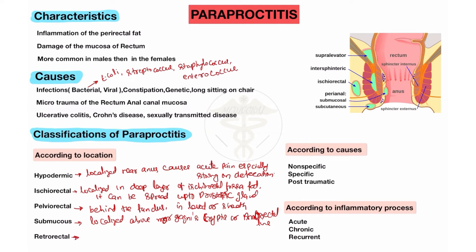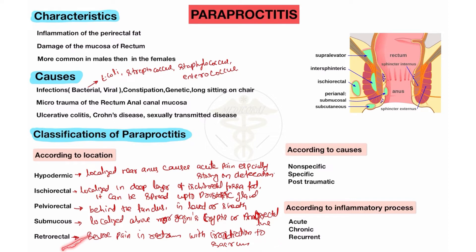Retrorectal Paraproctitis is present in the region of the rectum, causing severe pain in the region of the rectum — below the anus — with irradiation to the sacrum region. This is mostly present in the region of the rectum and radiates to the sacrum region of the vertebra.